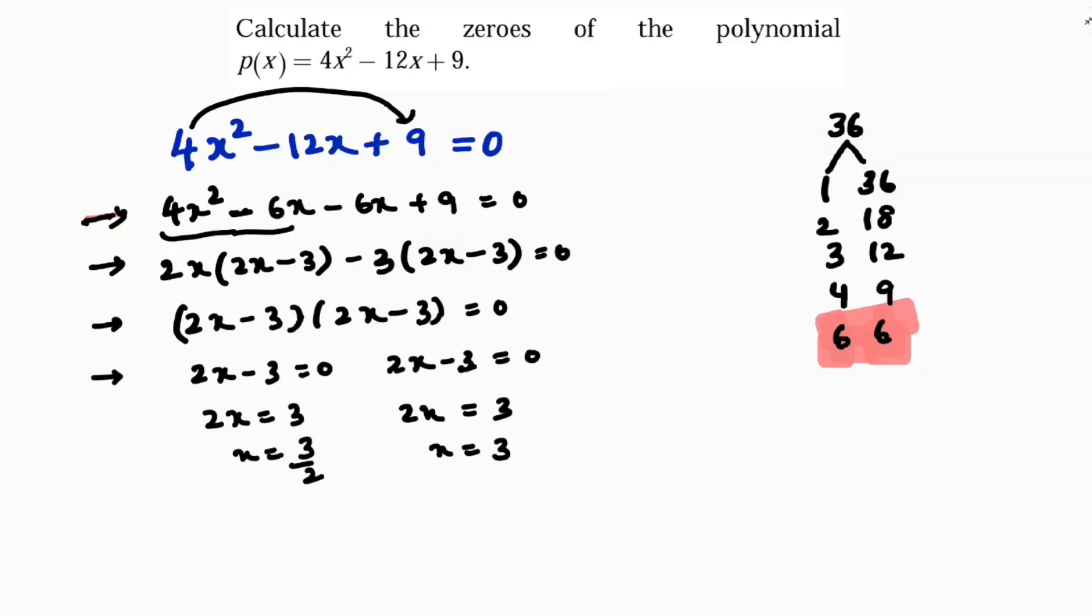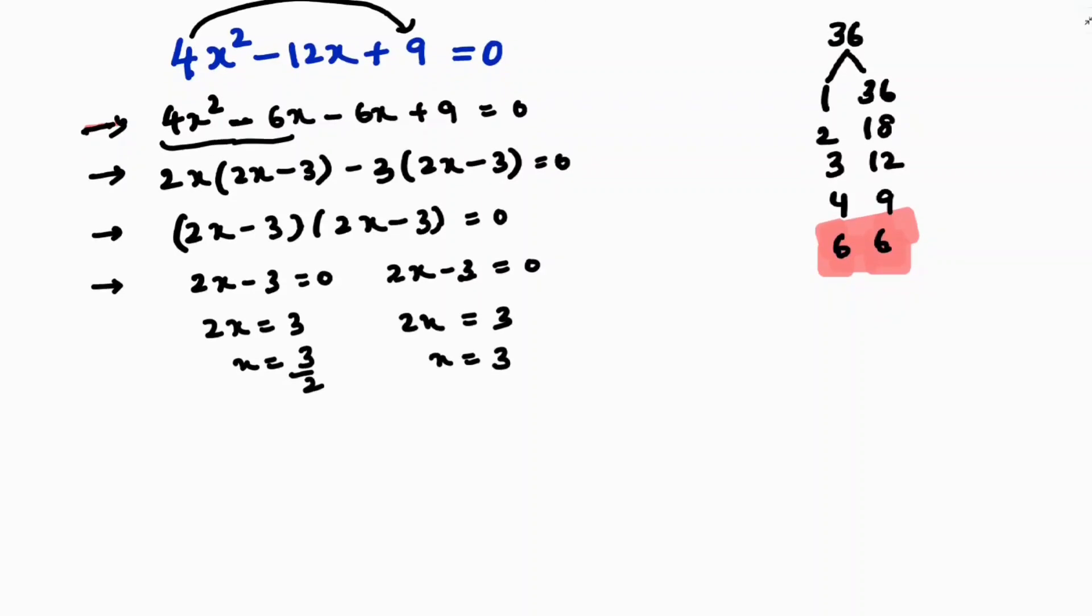The same problem we can solve by using the algebraic identity. 4x² minus 12x plus 9, we need to find 0, so equal to 0. See, it is a perfect square, and this is also a perfect square.